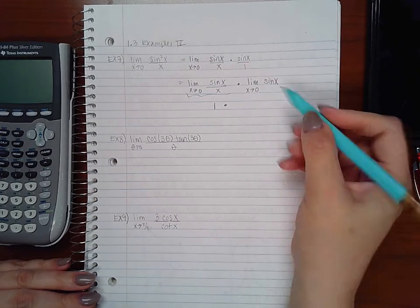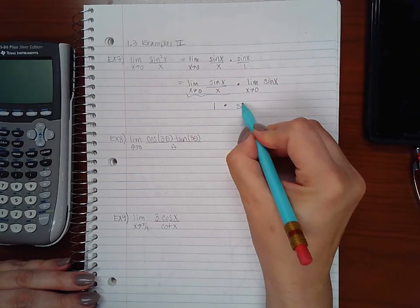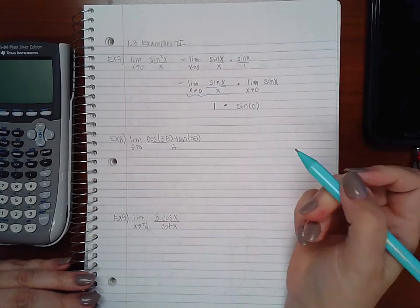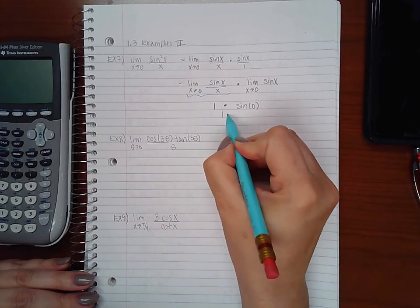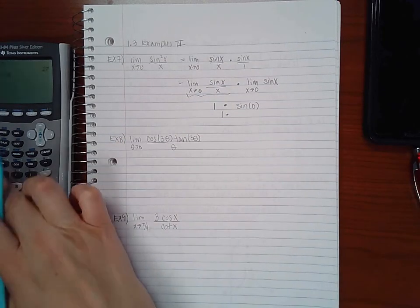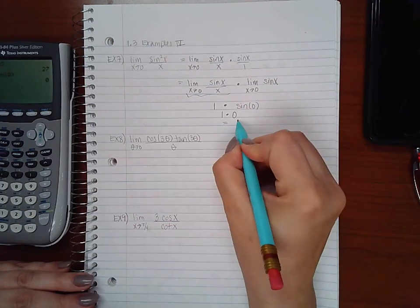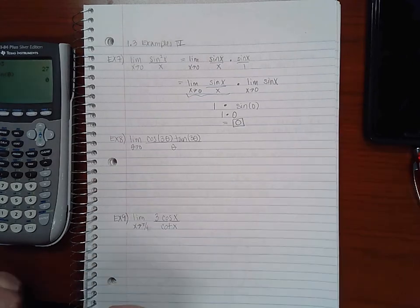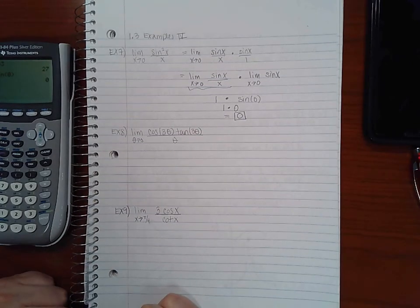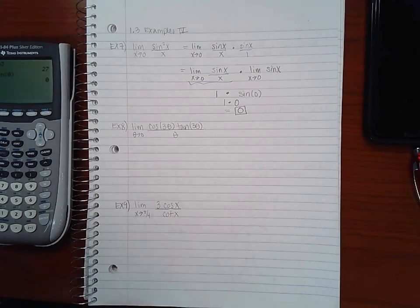Here that special theorem would be 1, and here I can do direct substitution so sine of 0. Then I get 1 times and sine of 0 should be 0, which means my answer ends up being 0 since 1 times 0 is in fact 0.